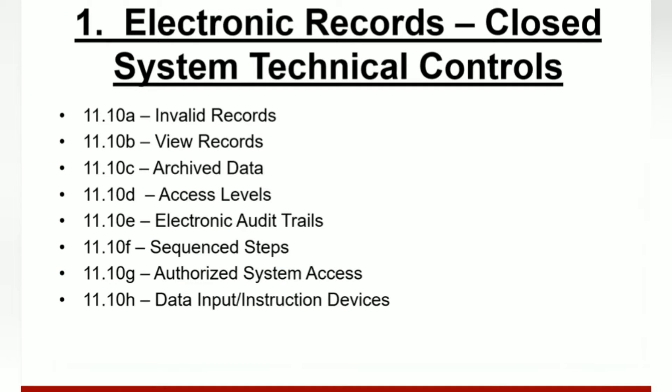Each section lists the specific regulation within 21 CFR Part 11 that applies, and you would answer yes, no, or not applicable. For 11.10A — valid records — the system must be able to detect invalid records where applicable, such as invalid field entries, fields left blank that should contain data, or values outside of limits. Also for 11.10A, the system must be able to detect that a record was altered since its last approval.